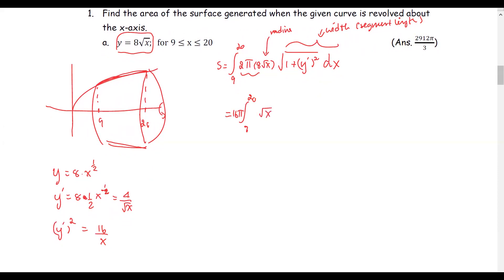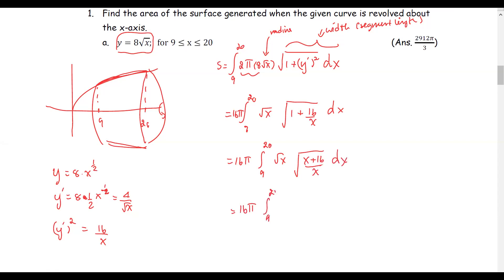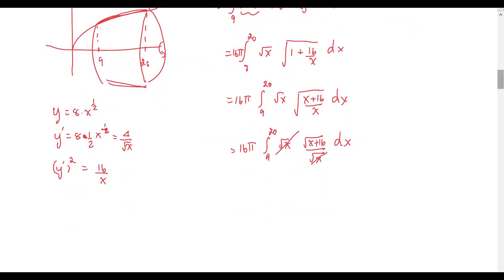Inside the integral is square root x times the square root of 1 plus 16 over x, with respect to x. We simplify the integrand: 1 plus 16 over x equals x plus 16, all divided by x. Using the algebraic property, we write it as square root of the numerator divided by square root of the denominator, and square root x cancels with square root x. We now have 16 pi times the integral from 9 to 20 of the square root of x plus 16, with respect to x.